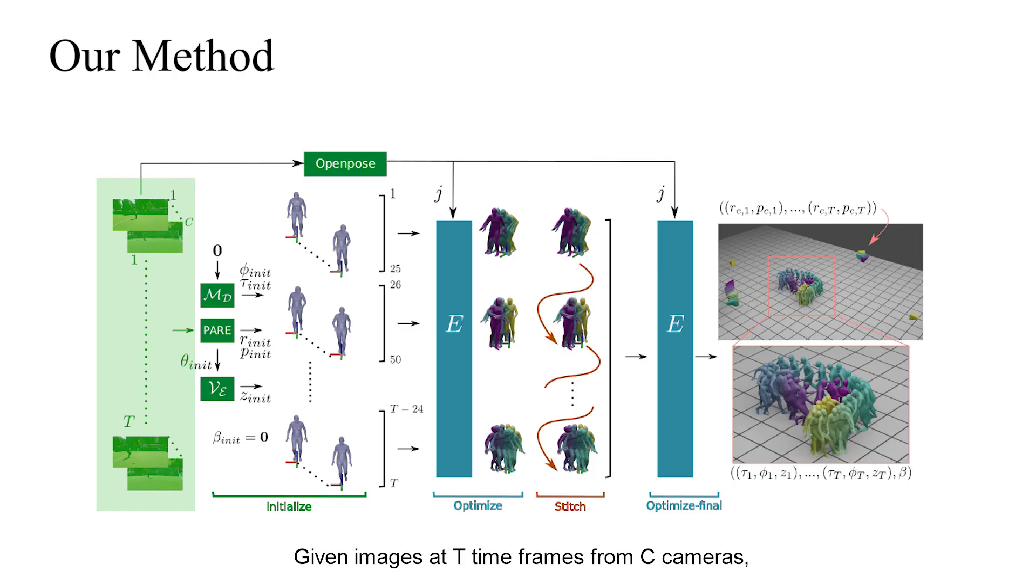Given images at t timeframes from c cameras, we first initialize the articulated pose of the person and poses of the cameras at each timeframe using a state-of-the-art method pair. The person's global pose at every frame is initialized to the mean starting pose in the latent space of our motion prior network.